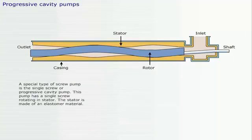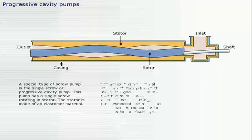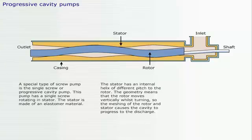A special type of screw pump is the single screw, or progressive cavity pump. This pump has a single screw rotating in stator. The stator is made of an elastomer material. The stator has an internal helix of different pitch to the rotor. The geometry means that the rotor moves vertically whilst turning, so the meshing of the rotor and stator causes the cavity to progress to the discharge.